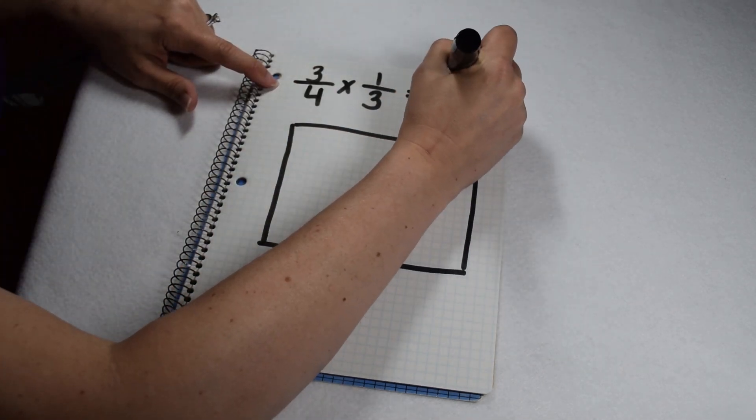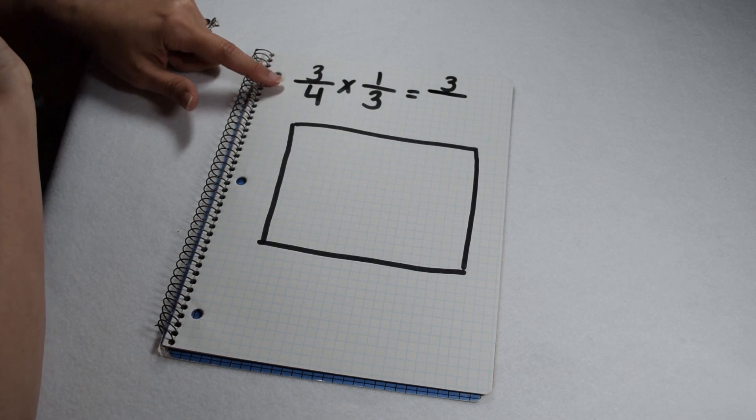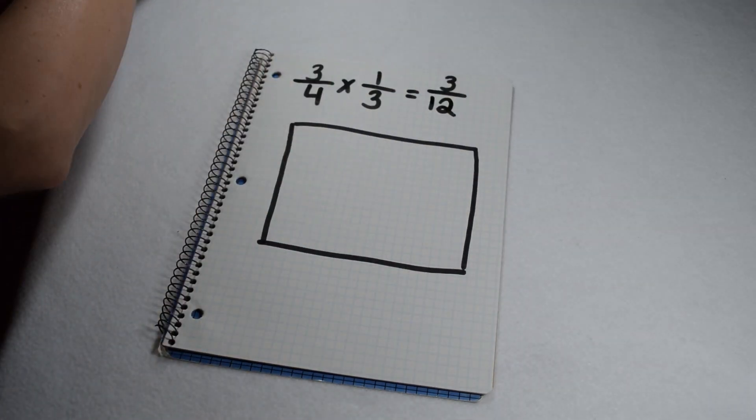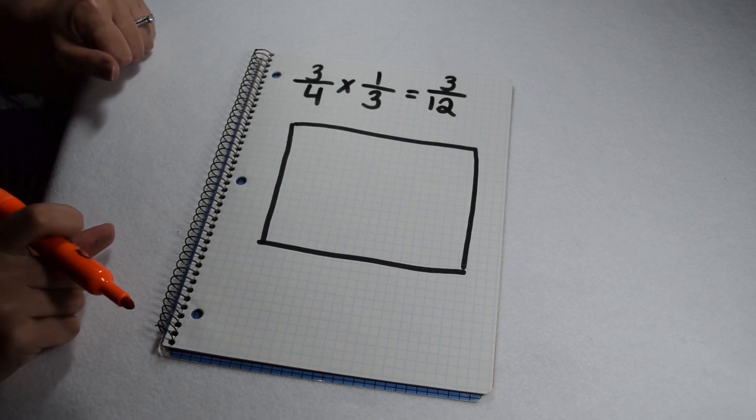Multiplying our numerators, 3 times 1 gives me 3. And multiplying our denominators, 4 times 3 gives me 12. So if we illustrate our area model correctly, we should come out with a solution of 3/12.